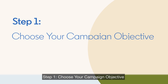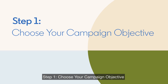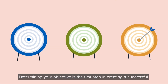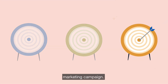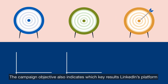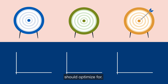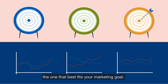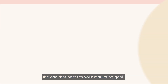Step 1: Choose your campaign objective. Determining your objective is the first step in creating a successful marketing campaign. The campaign objective also indicates which key results LinkedIn's platform should optimize for. Each campaign objective optimizes differently, so it is important to choose the one that best fits your marketing goal.